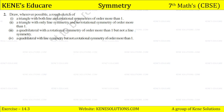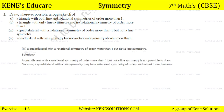Next, a quadrilateral with rotational symmetry of order more than one but not a line symmetry — this is not possible to draw, because a quadrilateral with a line symmetry may have rotational symmetry of order one but not more than one.